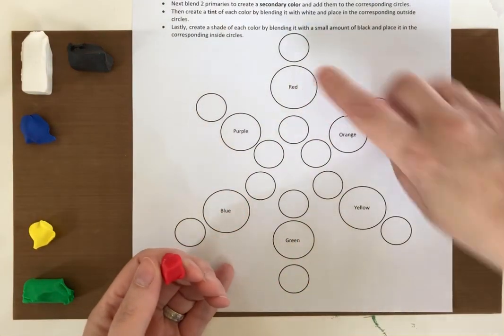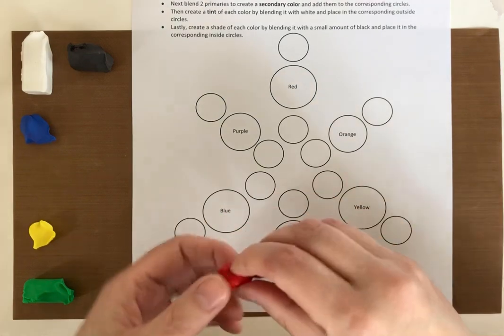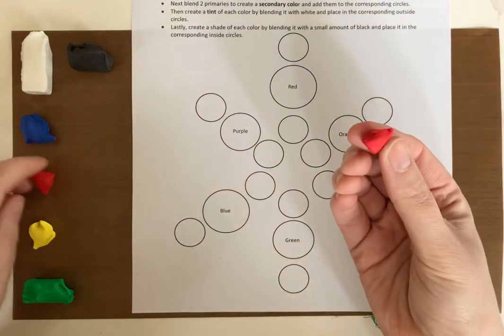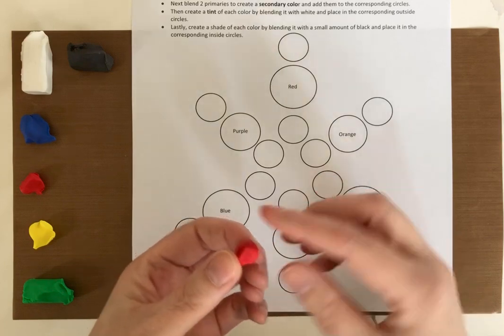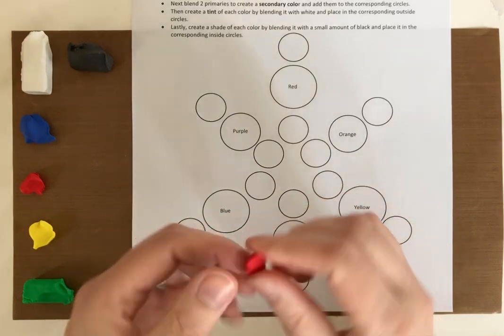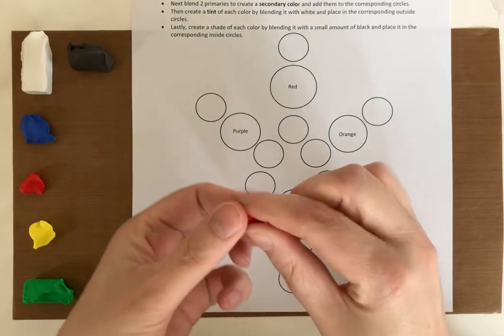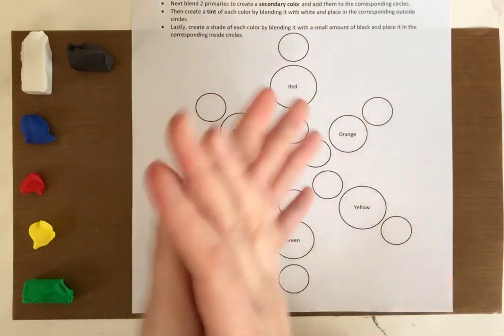So the primary colors we've got red, yellow, and blue. So you're just going to pull off a chunk or you can use a little needle tool or paper clip or something to cut off a little piece, and then you just got to condition it. So that just means kind of squishing it around to make it a little softer.